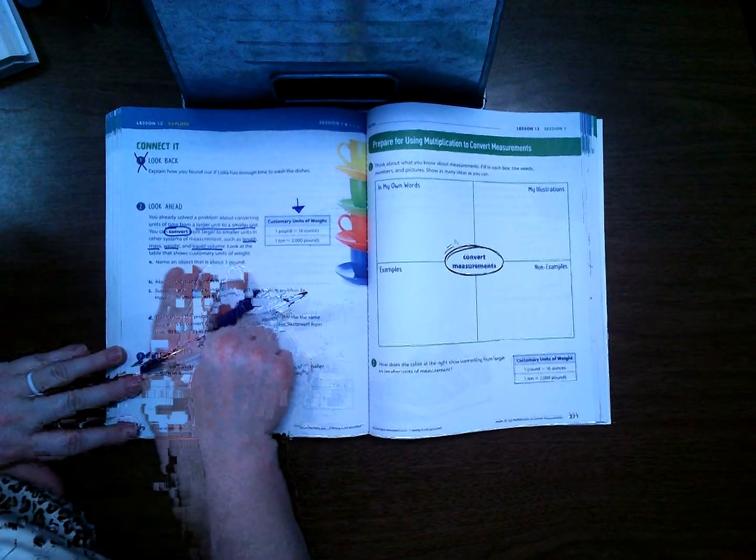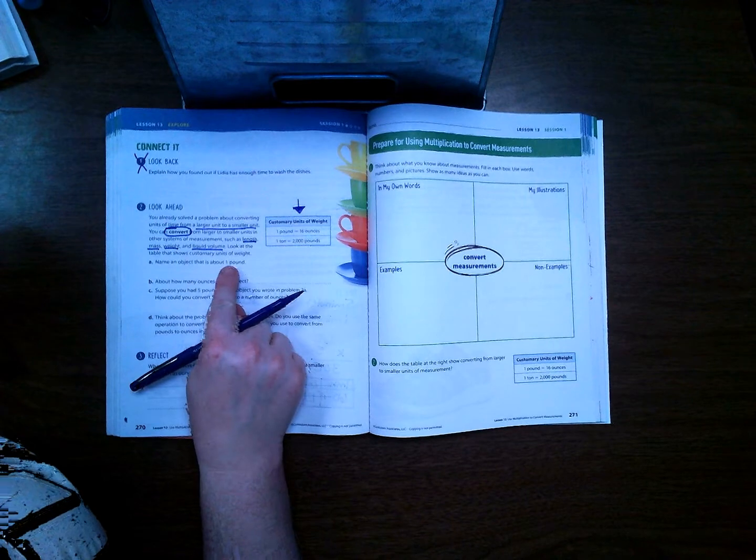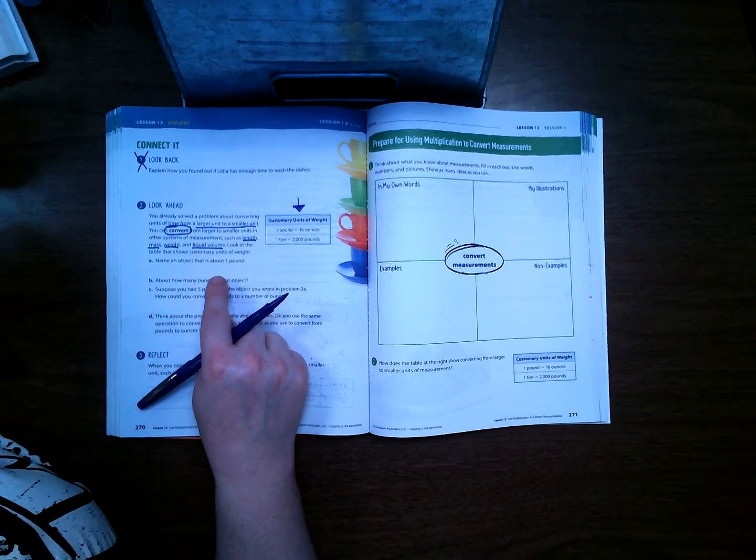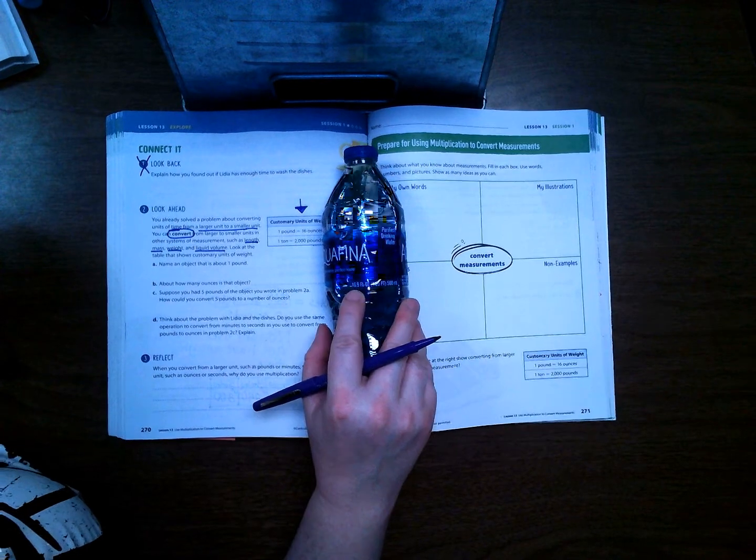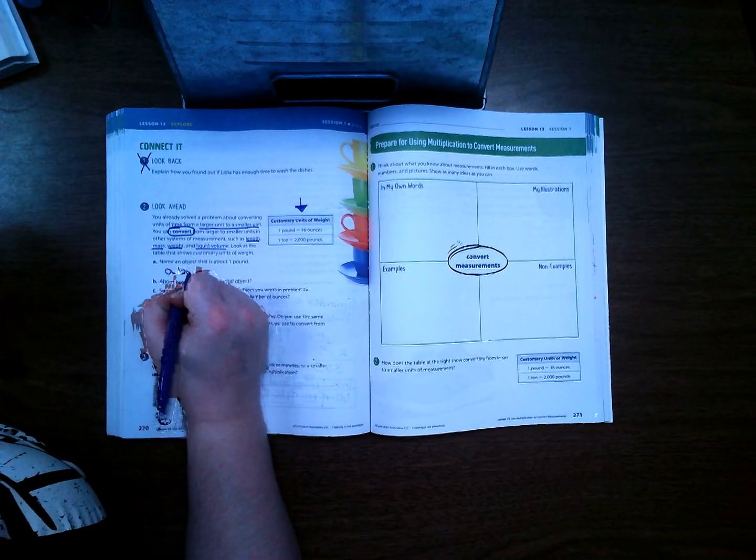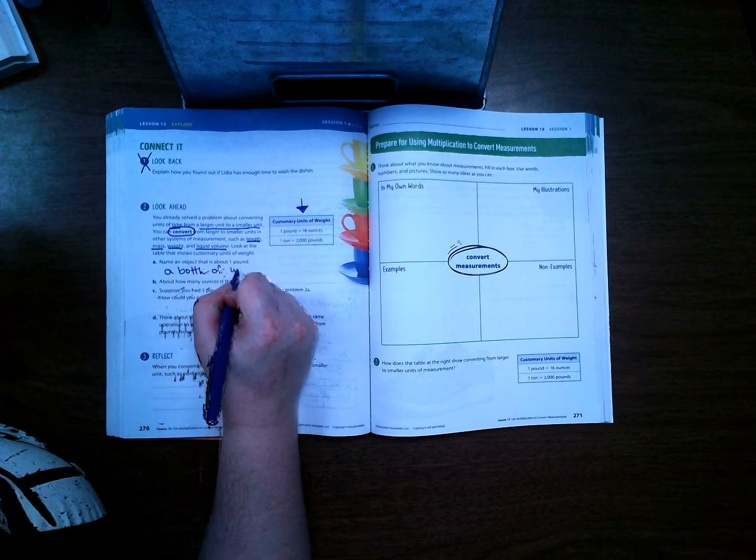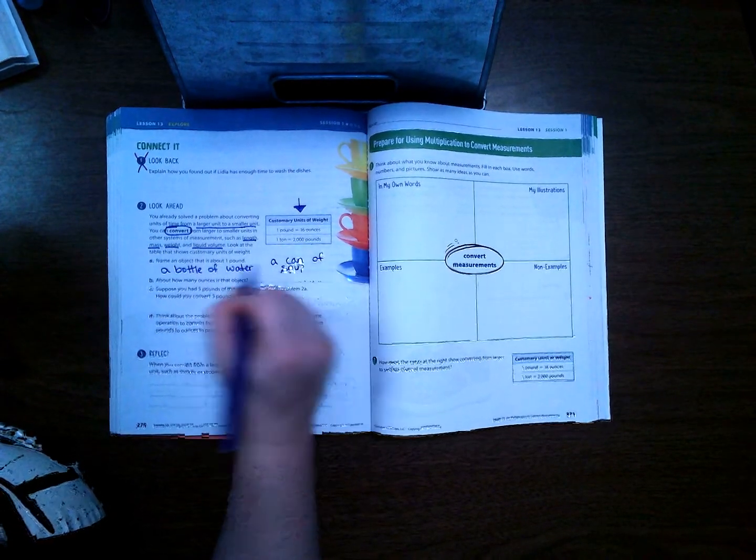Name an object that is about one pound. Think about things that you see around your house that might weigh one pound. It would have 16 ounces, and I like to look at things that have food. So right here I have a bottle of water and I have some like grape drinking stuff in it. And if I look and find the ounces, it's kind of hard to see, but it says 16.9 fluid ounces, so that's about one pound. Or you might find a can of soup or a can of corn or green beans.